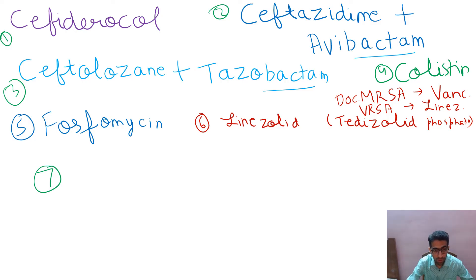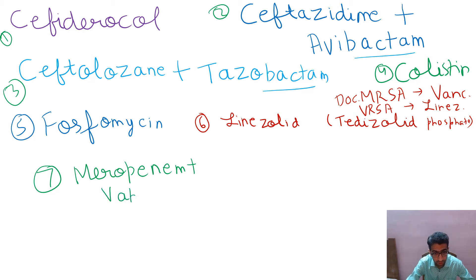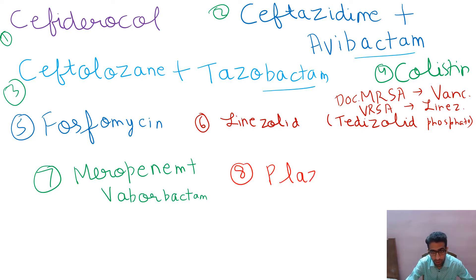Meropenem — meropenem is basically a carbapenem. Again, these are really drugs we are scared to use, but we have to use them in cases of extreme resistance. Vaborbactam — all these are the newer beta-lactamase inhibitors. Then the other drug we have is plazomycin.